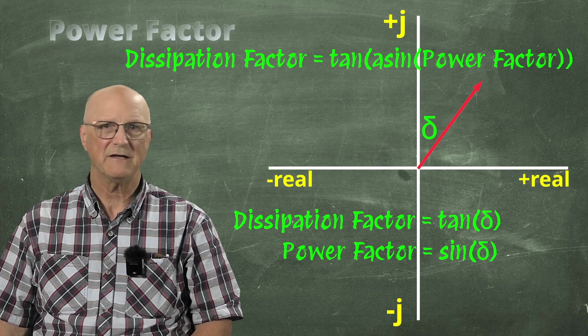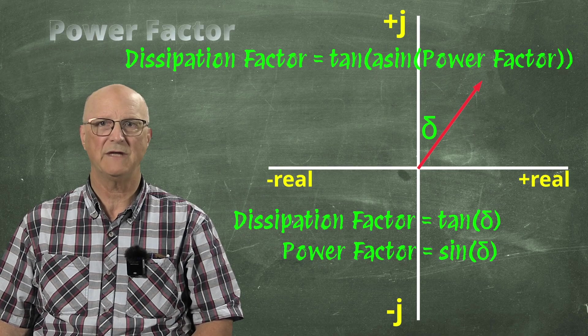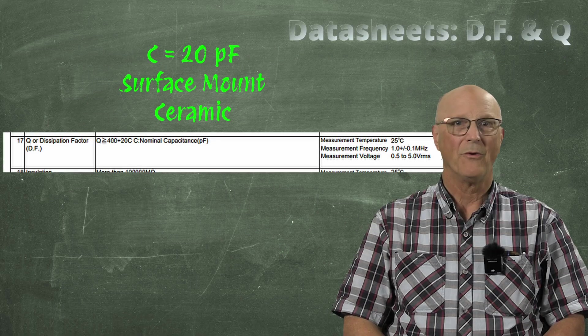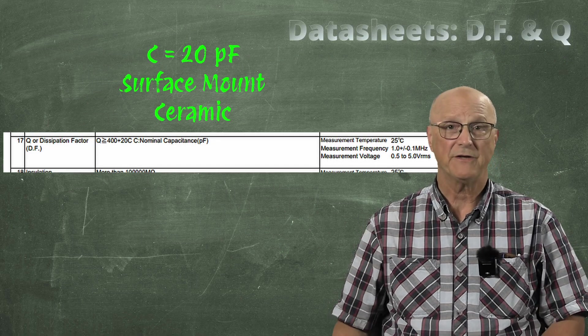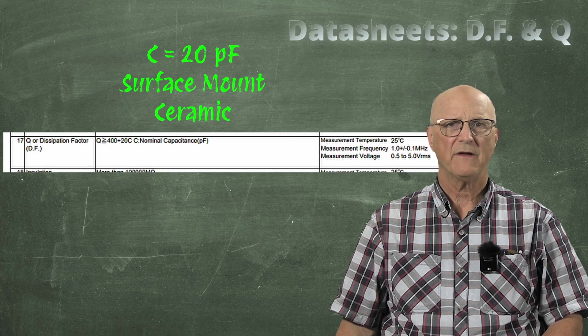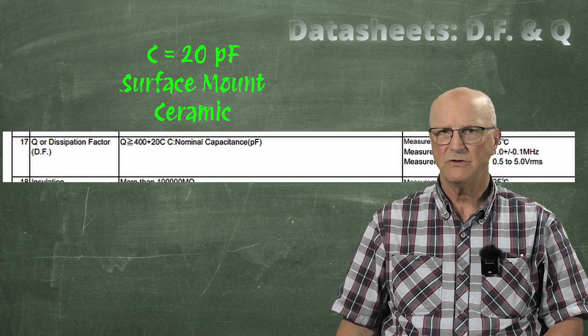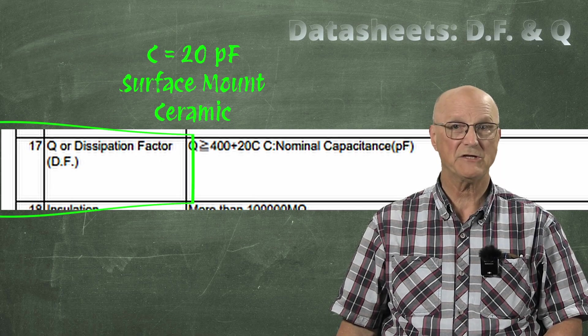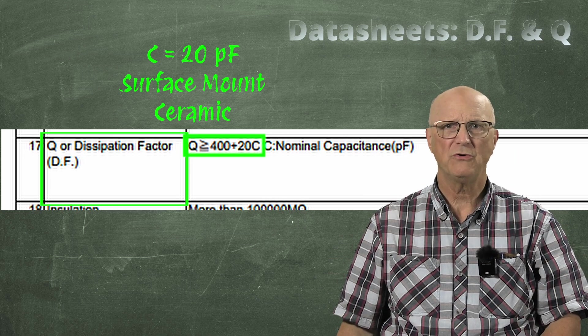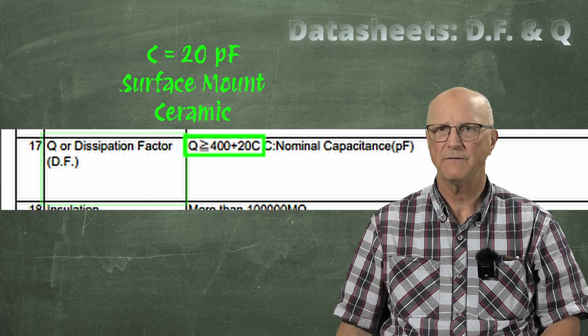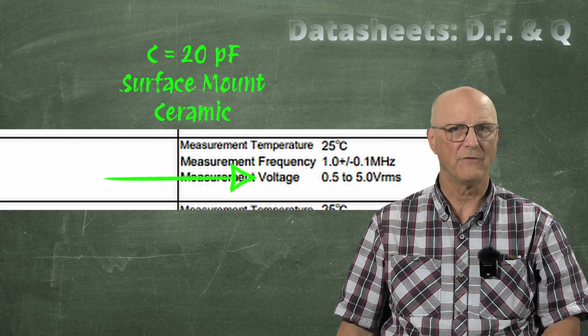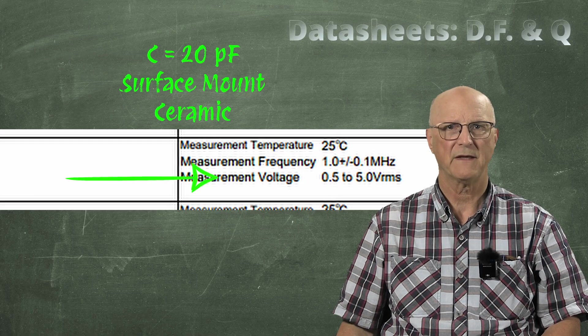Now, let's just spend a couple of minutes looking at some datasheets so you can figure out how they represent all this stuff. I'm looking at the datasheet for a 20 picofarad surface mount ceramic capacitor. Here on this page of the datasheet, notice that we find a specification for the Q or dissipation factor. They claim a Q of greater than 400. Notice that they specify the frequency, temperature, and voltage at which this is measured.